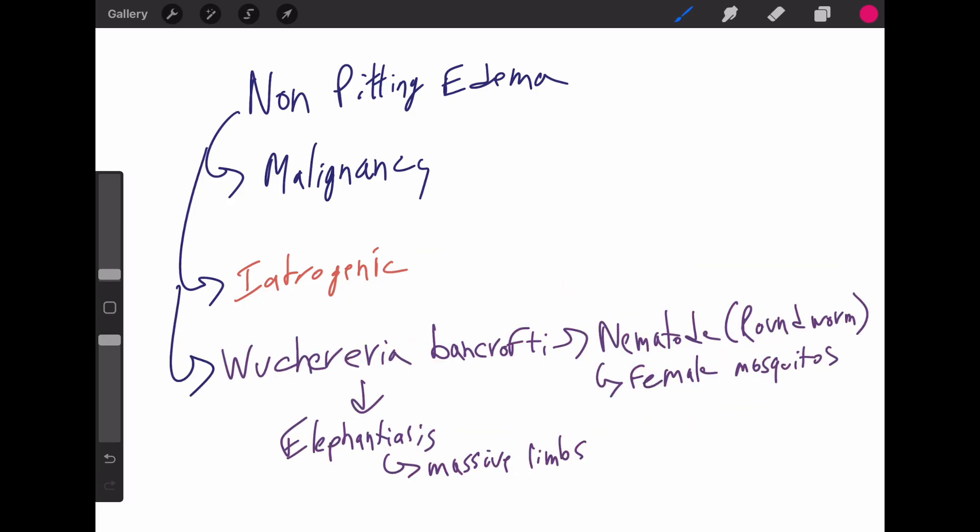Another cause of non-pitting edema, Wuchereria bancrofti. This is a nematode, a roundworm spread by female mosquitoes. It causes elephantiasis or massive limb enlargement due to lymphatic obstruction.